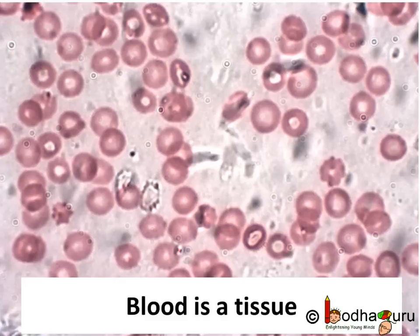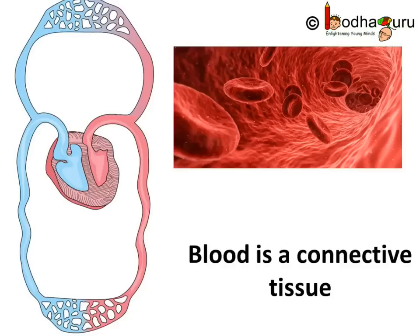Blood supports other tissues by providing nutrients and connects them. For example, the lungs send oxygen to the tissues through blood, and the digestive system provides nutrients to the tissues through blood. So we can say blood is a connective tissue that transports oxygen, food, hormones, and waste materials. It is a fluid tissue.